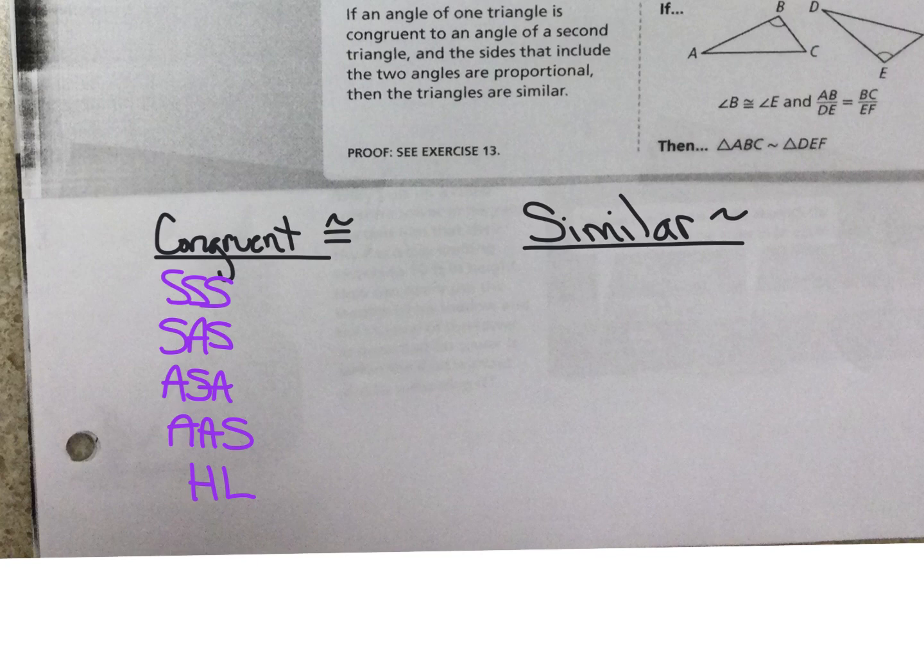Similar, we have AA. We only need to write angle-angle because we know the third angle will be congruent because of the 180-minus thing. So we only need to write two A's. So the way I remember this is I take that third A and I put it here, and I surround it with S's. And then my last one is SSS. So we have AA, angle-angle, we have side-angle-side, and we have side-side-side to prove similar.